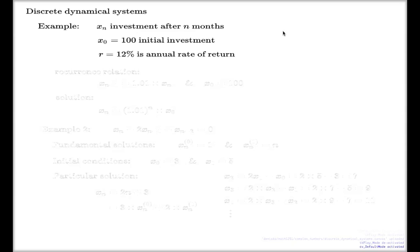The canonical example of a discrete dynamical system is like this. You introduce a variable x sub n, and give it a meaning: it is the investment, or the amount of money you have after n months of investment into some assets. In this context, x naught will be the initial investment. In my example I'll take 100 units as the initial investment, with a 12% annual return rate, or 1% monthly return rate.